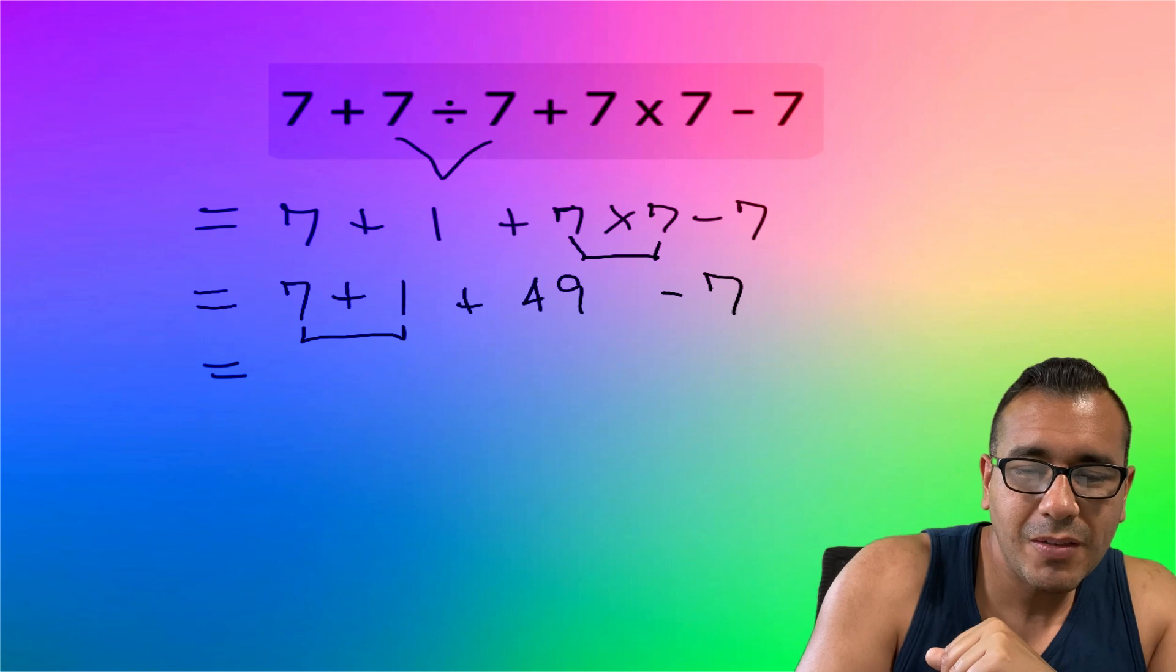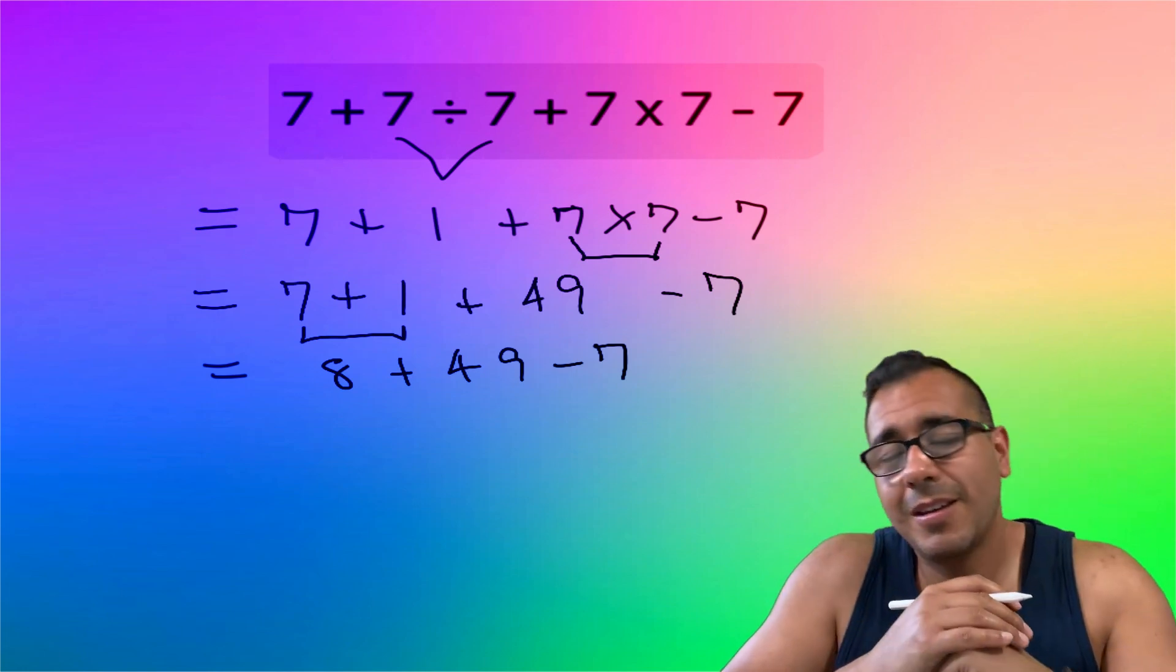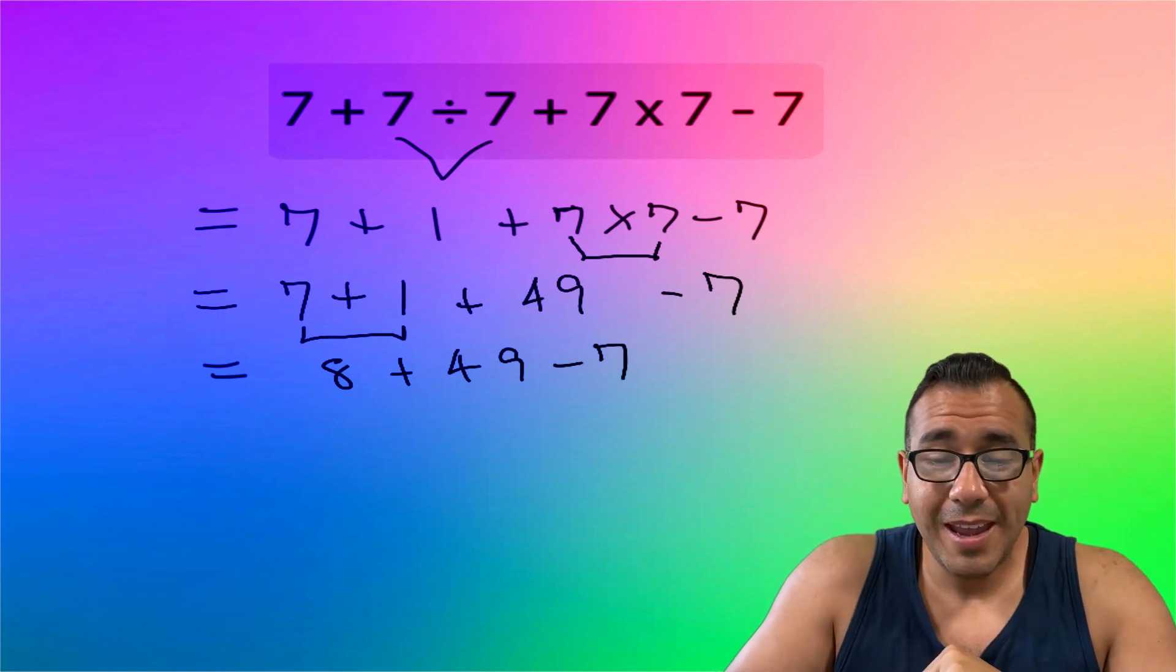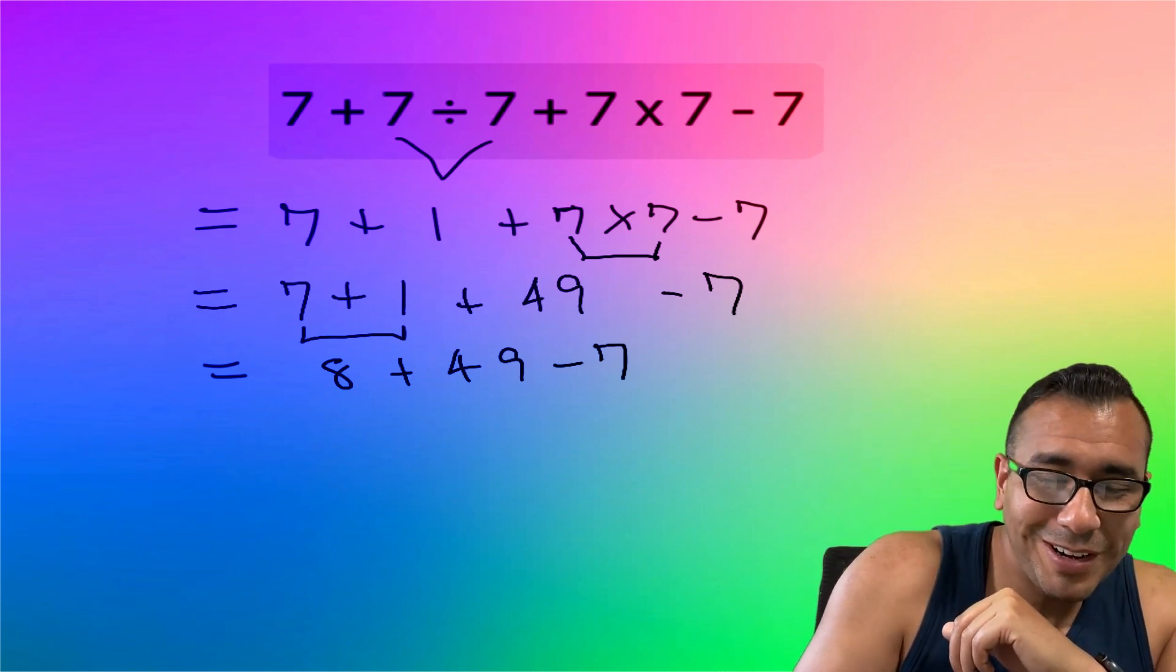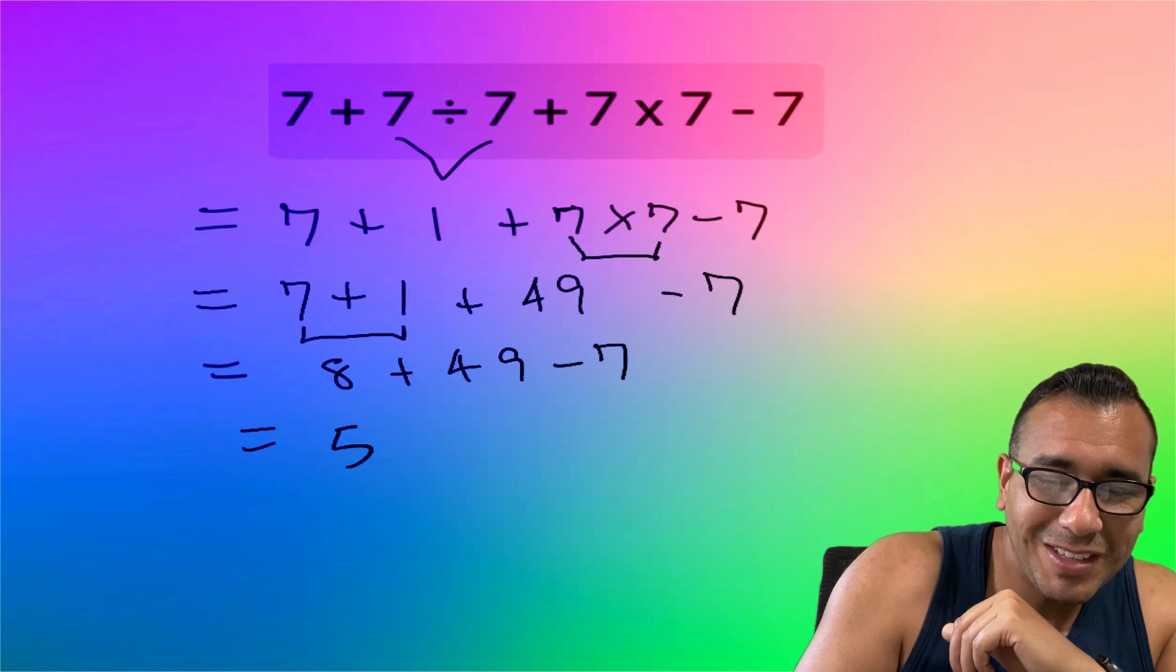So 7 plus 1 is 8, bring down that 49 minus 7. And now we're going to do 8 plus 49, so that's going to give us 57 minus 7.